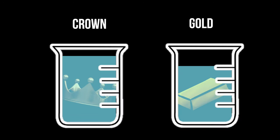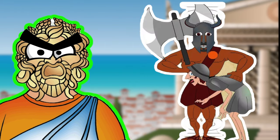Surprise, surprise, the crown displaced more water than the piece of gold, which means that the crown was a mixture of gold and silver. You can probably guess as to what happened to the goldsmith who made the crown.